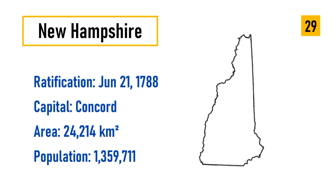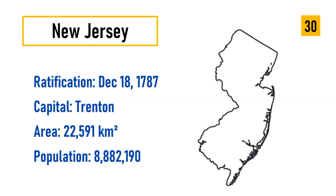Number 29: New Hampshire, ratification June 21, 1788, capital Concord, area 24,214 square kilometers, population 1,359,711. Number 30: New Jersey, ratification December 18, 1787, capital Trenton, area 22,591 square kilometers, population 8,882,190.